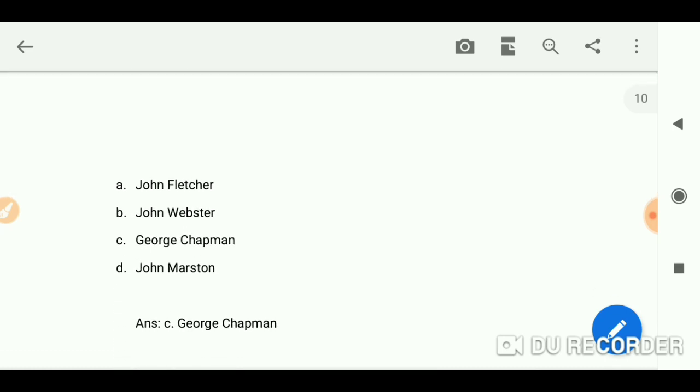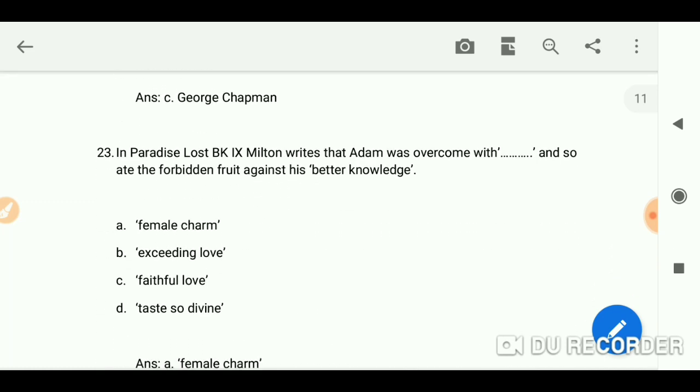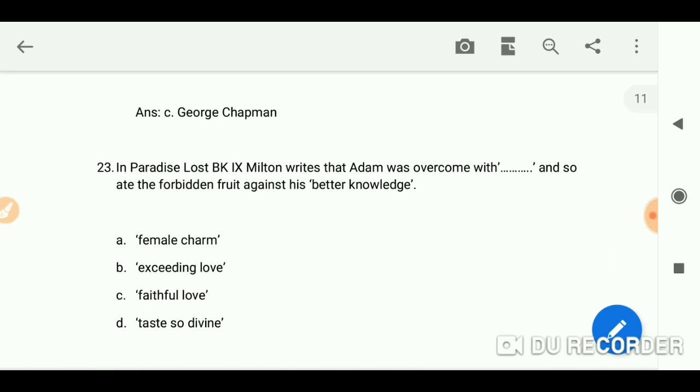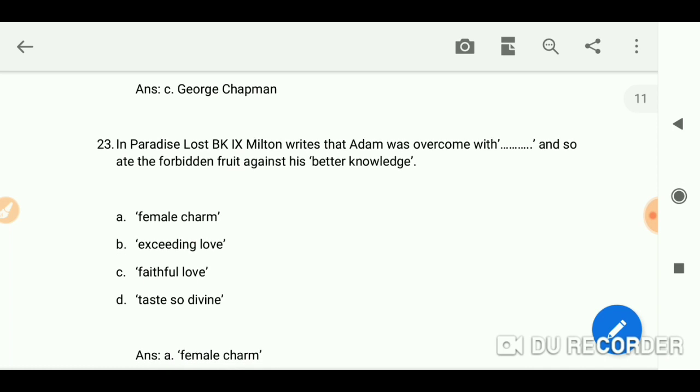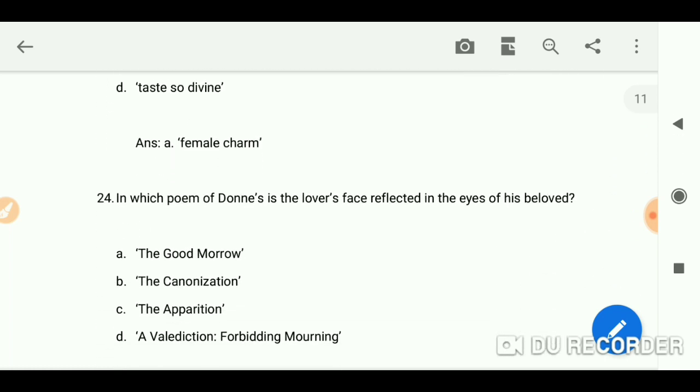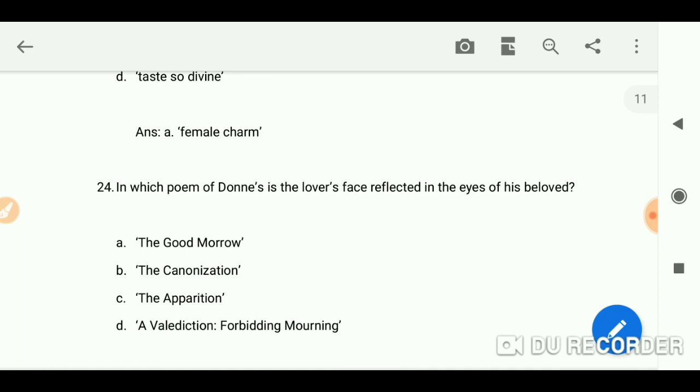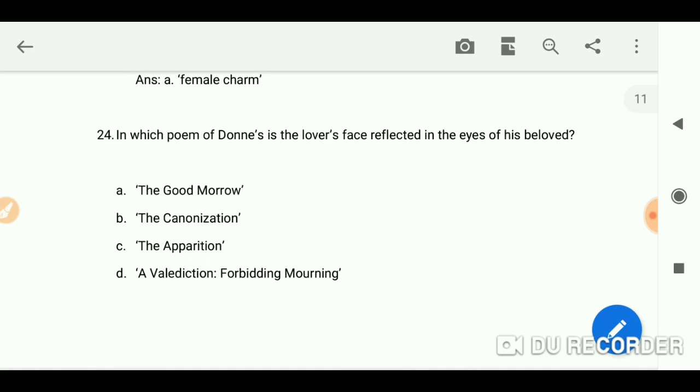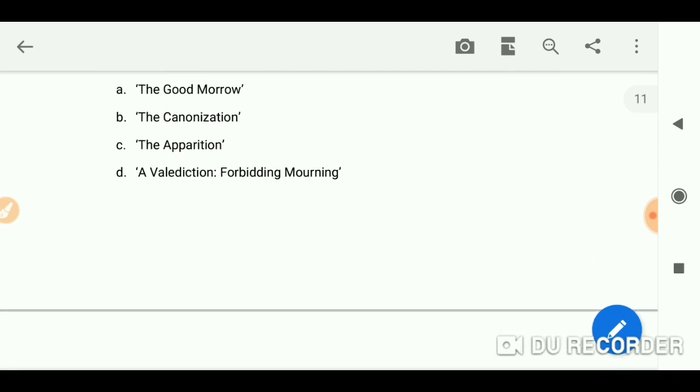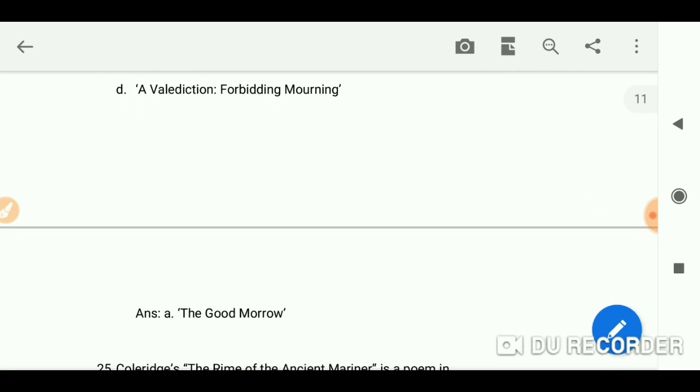In Paradise Lost Book Ninth, Milton writes that Adam was overcome with female charm and so ate the forbidden fruit against his better knowledge. In which poem of Donne is the lover's face reflected in the eyes of his beloved? The Good Morrow.